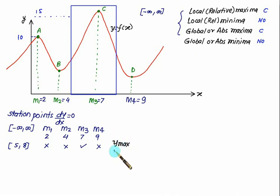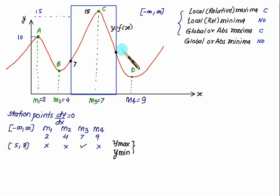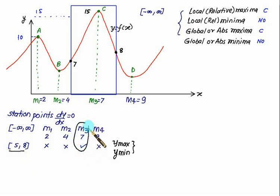If asked for the maximum and minimum values on the interval 5 to 8, in addition to y at c, we also calculate the values at the endpoints: x = 5 and x = 8, and at the stationary point x = 7. Suppose the corresponding y-values are 7, 8, and 15 at x = 5, 8, and 7 respectively.